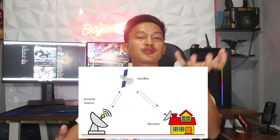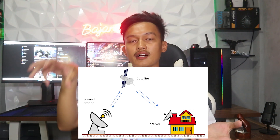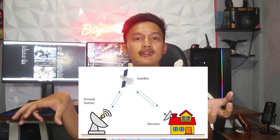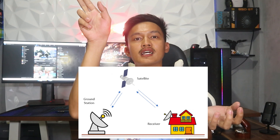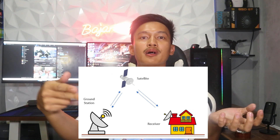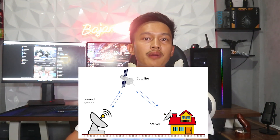Starlink is an internet provider founded by Elon Musk. How do you operate Starlink? You connect from the ground station — which is the data center that provides information — up to the constellation satellite, then to your Starlink dish, then to the router, and then to your phone, computer, or any kind of device.